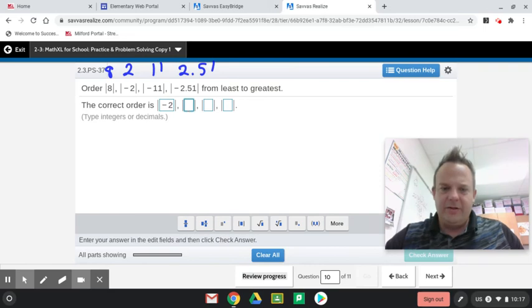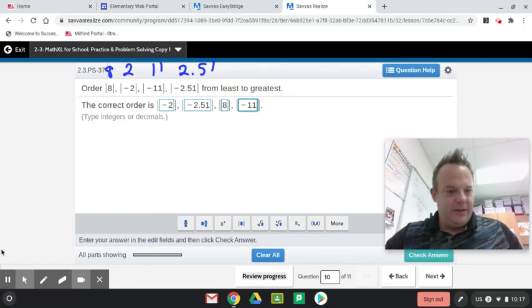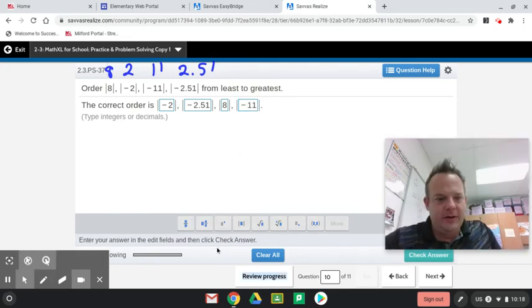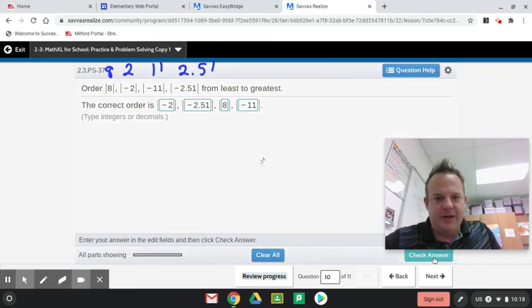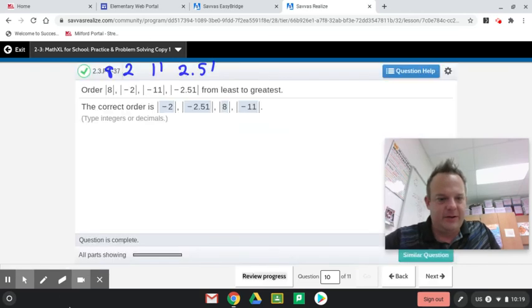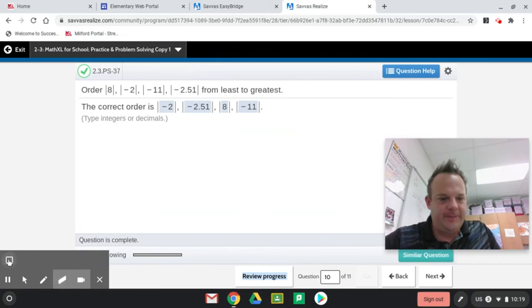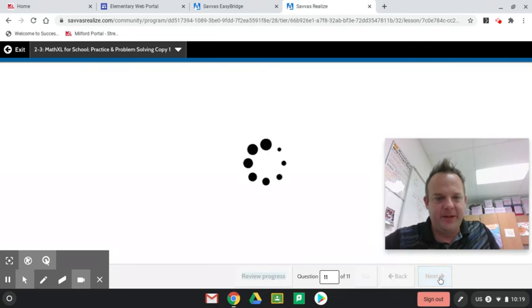Smallest one is the absolute value of negative 2. Or, wait, yeah. And then, yeah, then the negative 2.51. Then the absolute value of 8. And then the greatest one is the absolute value of negative 11. All right. All right. So, let's see if we got that. Good. All the clicking, you know what I mean? Okay.